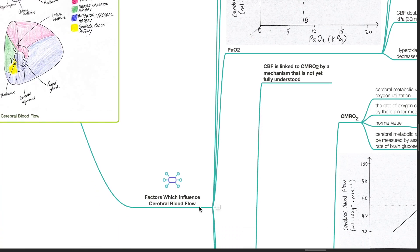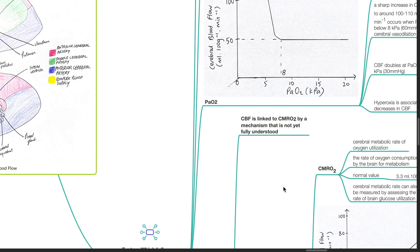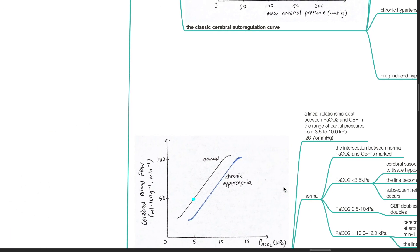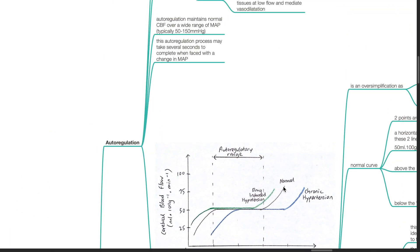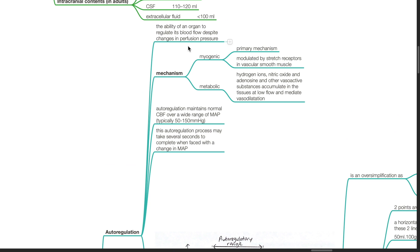Factors which influence cerebral blood flow. Autoregulation. This is the ability of an organ to regulate its blood flow despite changes in perfusion pressure.